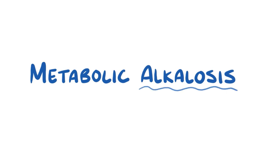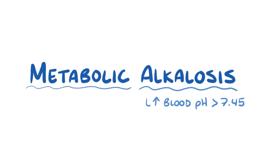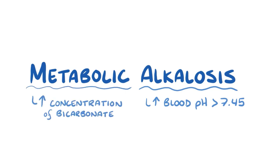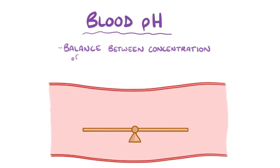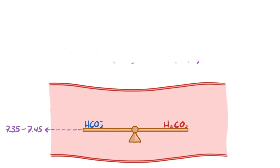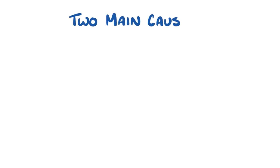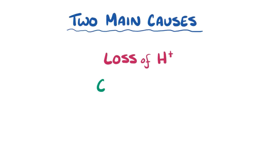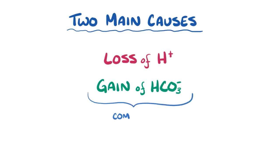With metabolic alkalosis, alkalosis refers to a process that raises blood pH above 7.45, and metabolic refers to the fact that it's caused by an increase in the concentration of bicarbonate, or HCO3-, in the blood. Normally, blood pH depends on the balance between the concentration of bases, mainly bicarbonate, which increases the pH, and acids, which decrease the pH. The blood pH needs to be constantly between 7.35 and 7.45. Metabolic alkalosis can typically happen from two main causes: loss of hydrogen ions and gain of bicarbonate ions, or most often a combination of these two.